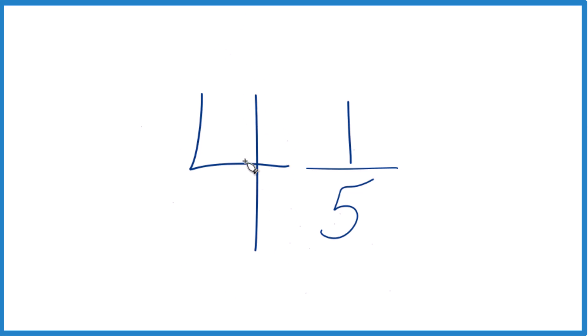You take the whole number 4, multiply it by 5. 4 times 5 is 20, then you add 1. 20 plus 1 is 21. That's our numerator.